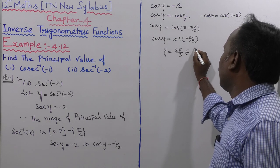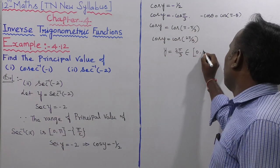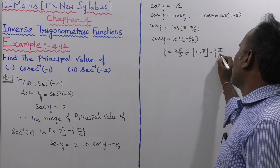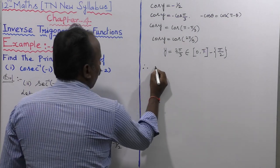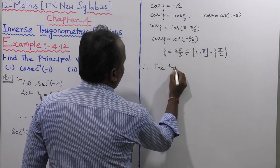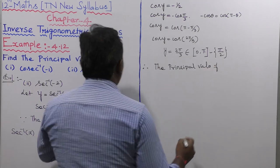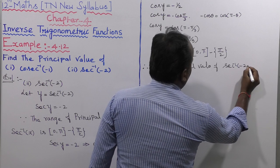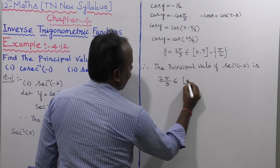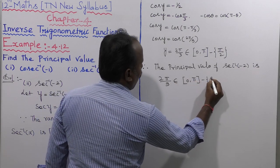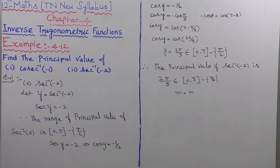Since 2pi/3 belongs to the closed interval 0 to pi, except the value of pi by 2, therefore the principal value of sec inverse of minus 2 is 2pi/3.